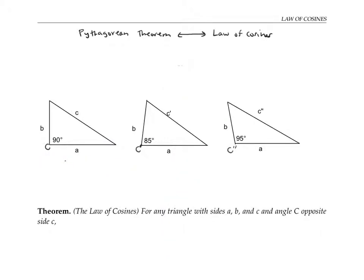Recall that the Pythagorean theorem says that for a right triangle like this one, the length of the hypotenuse is related to the lengths of the sides by the formula c squared equals a squared plus b squared. I like to think of the law of cosines as a generalization of the Pythagorean theorem to triangles that are not necessarily right triangles.